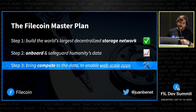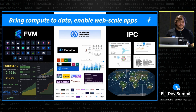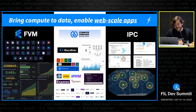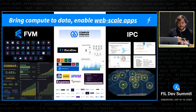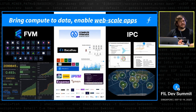Step three means once the network has the data, users should be able to run computations on it and build applications. This breaks down into sub-components: one is the FVM to bring compute into the chain itself — very excited that since we started talking about this last year, the FVM has shipped and is now in the network. The second is enabling large-scale computation around that data through compute-over-data networks, essentially L2s running on top of Filecoin. Third, we want to scale the chain itself to a hyper scale — billions or trillions of transactions per second — which is a key advantage that's going to make Filecoin much more successful.